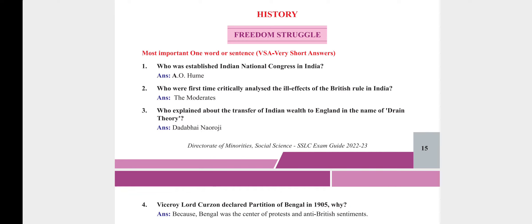From the viewpoint of SSLC examination 2023, most important one-word or one-sentence answers from the History Freedom Struggle chapter. Who established the Indian National Congress in India? A.O. Hume. Who were the first to critically analyze the ill effects of the British rule in India? The Moderates.